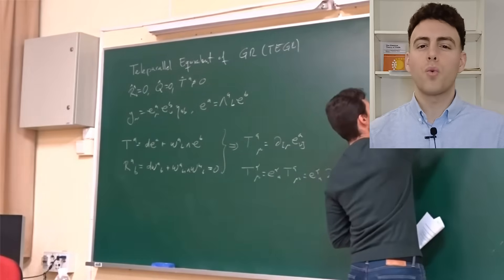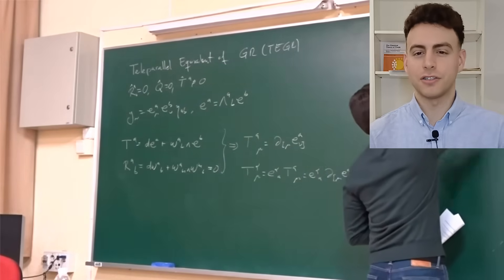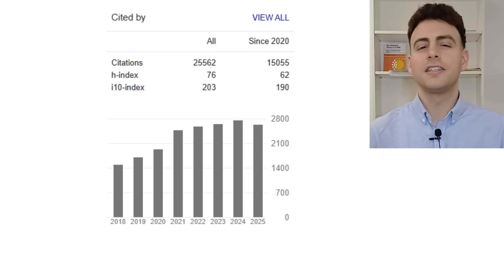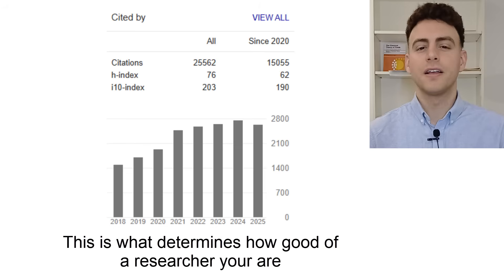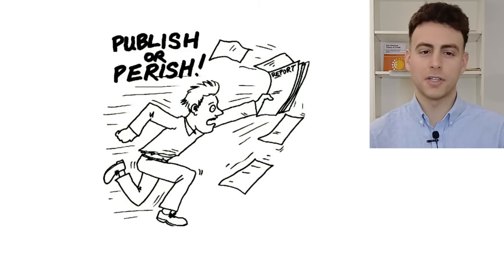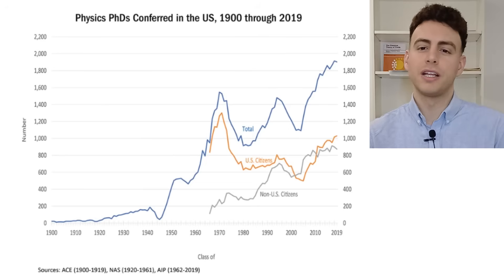You might be wondering why theoretical gravitation research usually looks like this. It is because today's academic system is driven by citations, and to be cited one must publish.